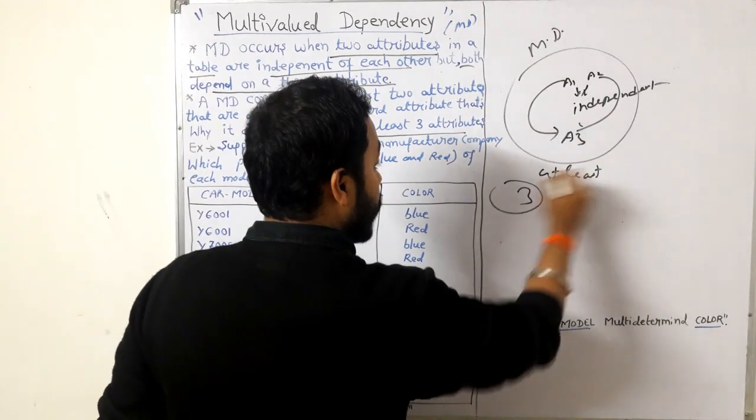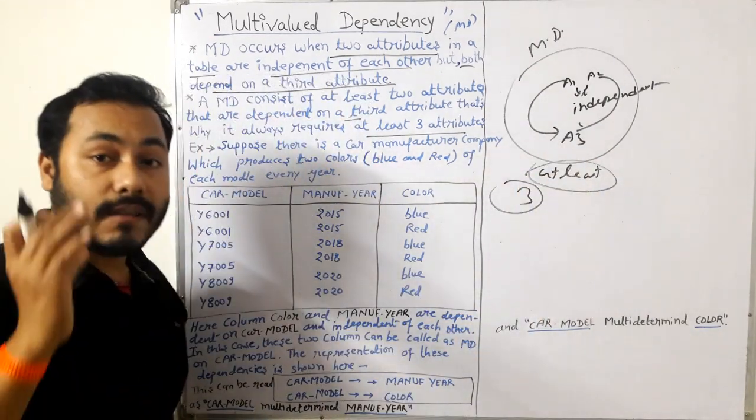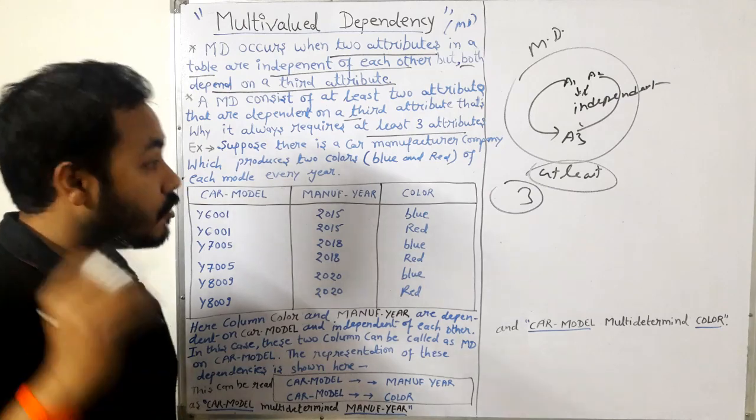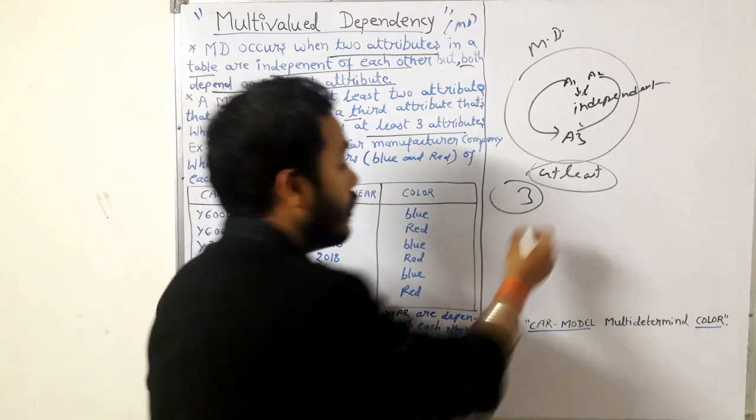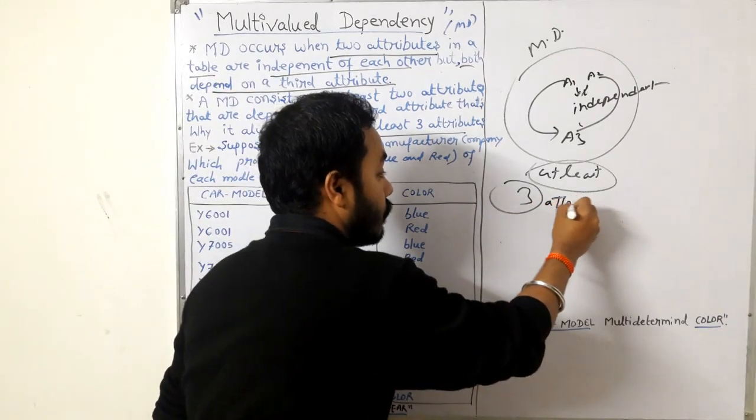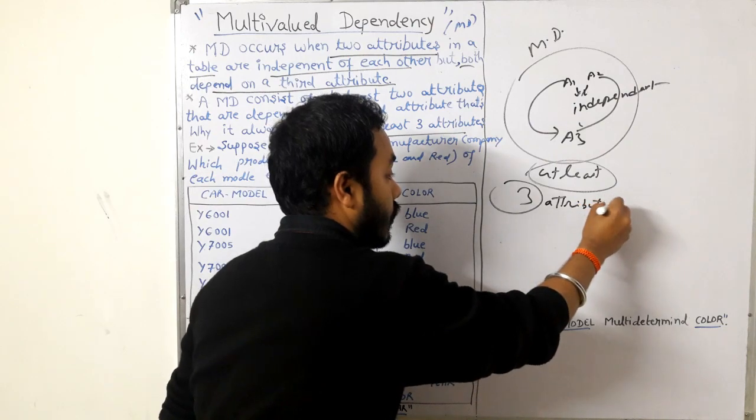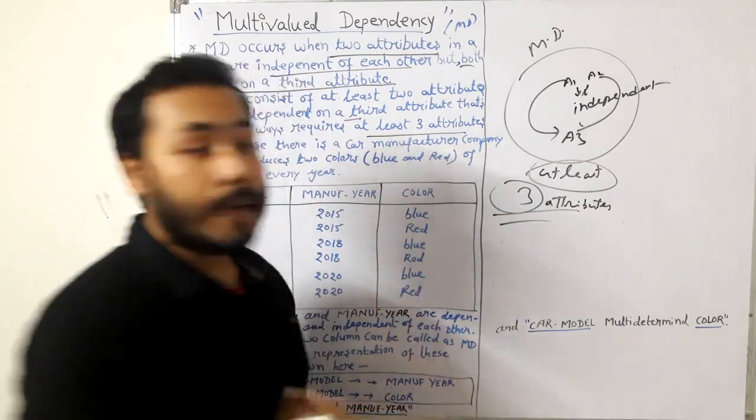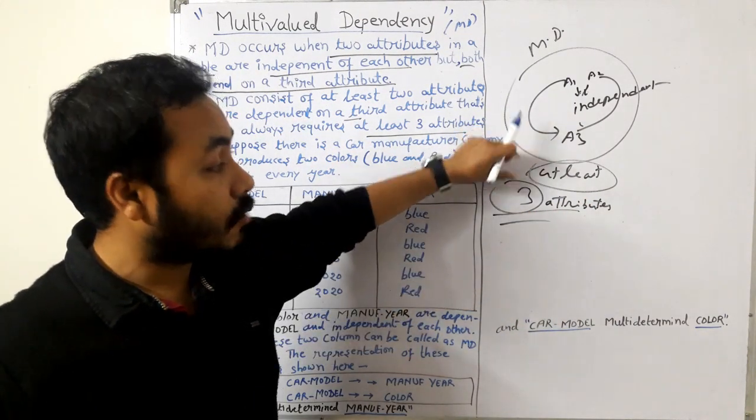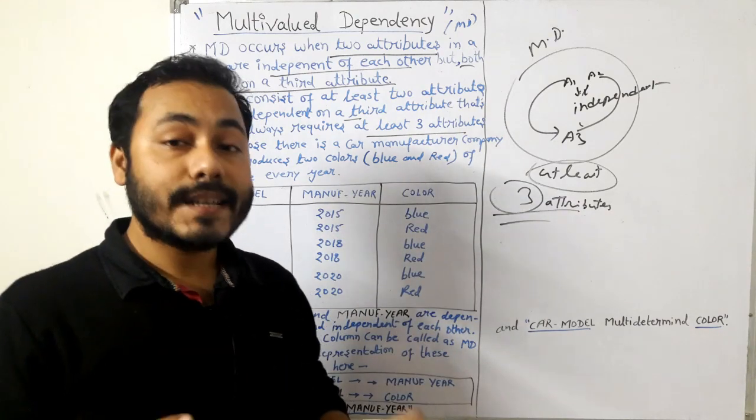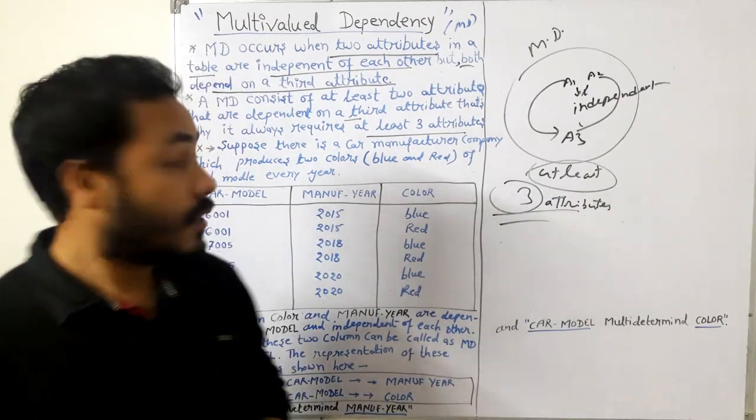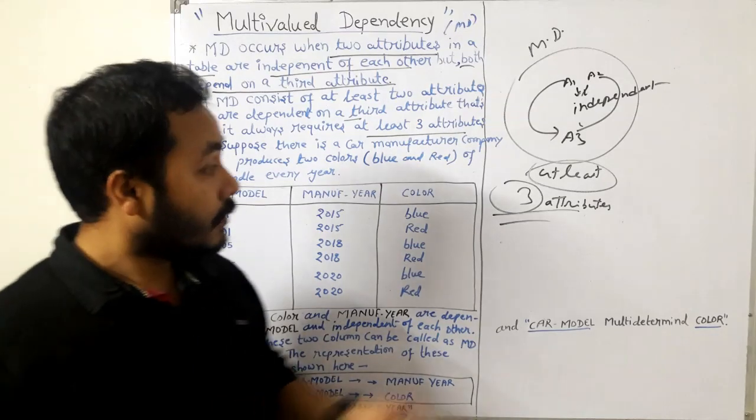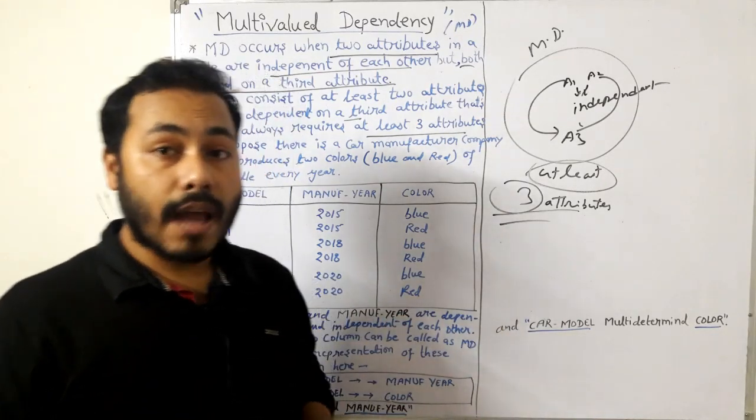For multi-valued dependency there should be at least three attributes. Why? You have just seen I explained the fact of why there should be at least three attributes.